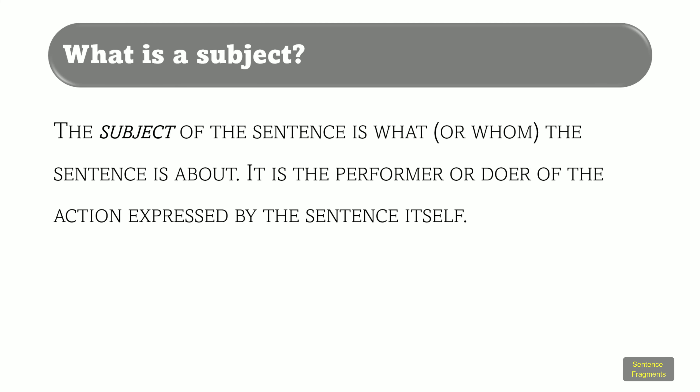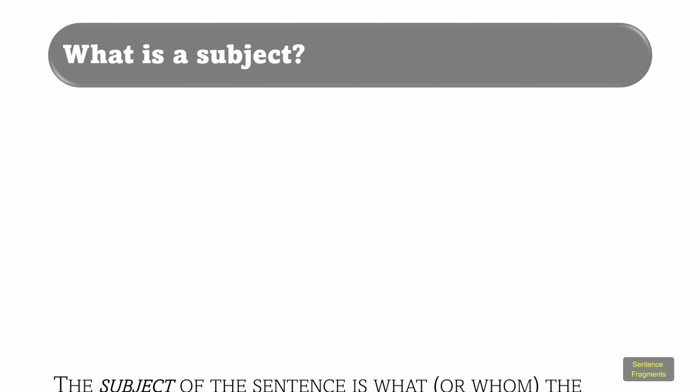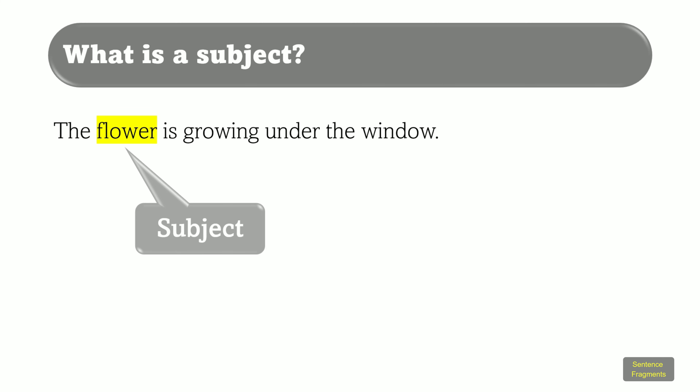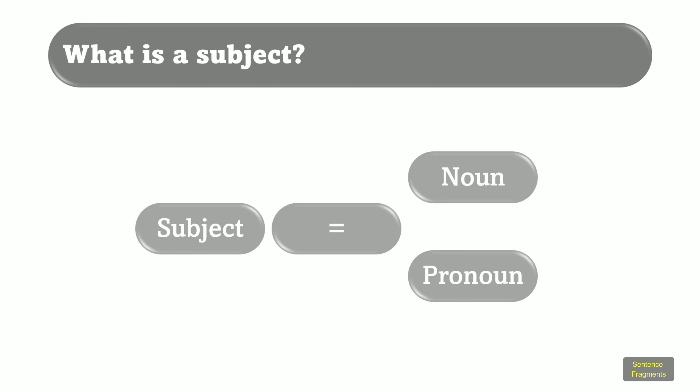What is a subject? You already heard that a subject is needed for an independent clause or sentence. The subject of the sentence is what, or whom, the sentence is about. It is the performer or doer of the action expressed by the sentence itself. Consider the following sentence: The flower is growing under the window. The word flower is the subject of the sentence. You must bear in mind that a subject will always be a noun or a pronoun.